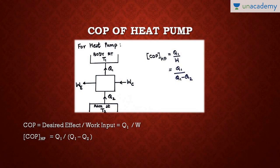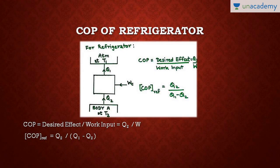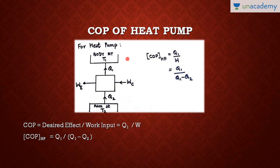A refrigerator is for cooling and a heat pump is for heating. In a heat pump, the body is at temperature T1 and we have to heat it, so we supply heat Q1. The atmosphere is at T2. To achieve that desired effect Q1, the work input is W. So COP of heat pump equals Q1 upon W, which equals Q1 upon (Q1 minus Q2).